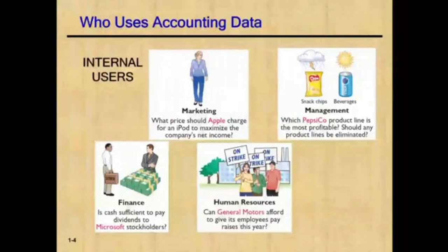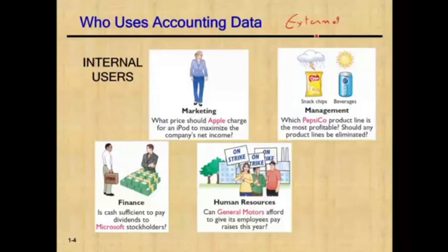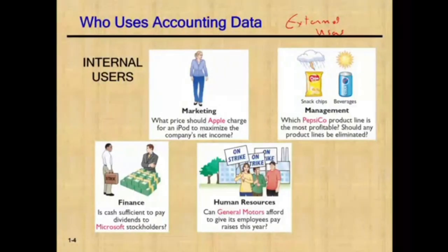Now, we talked about users. We communicate information to two types of users: internal users and external users. Internal and external refers to whether they are inside or outside the company. Who would be internal? For example, the marketing department would be internal to the company — we provide them with information to help them make better decisions.